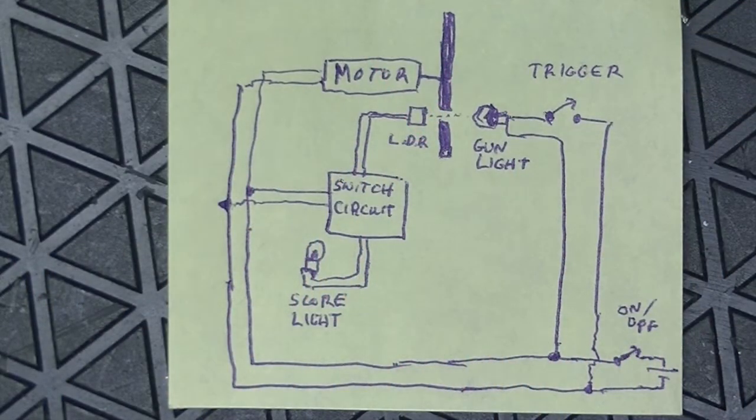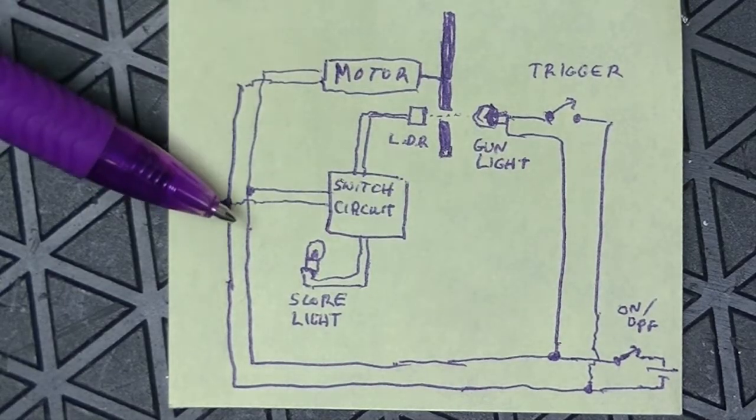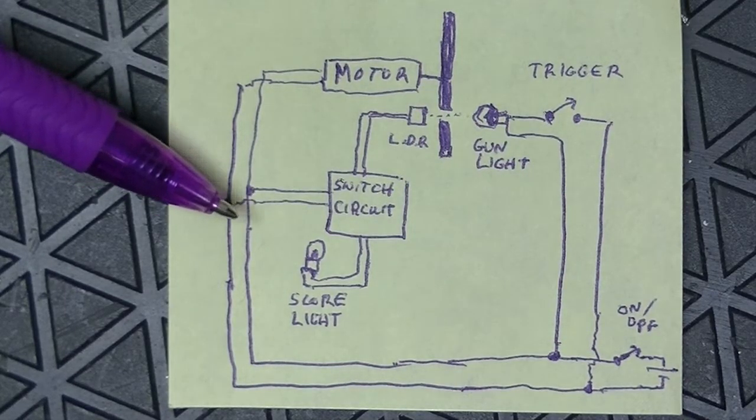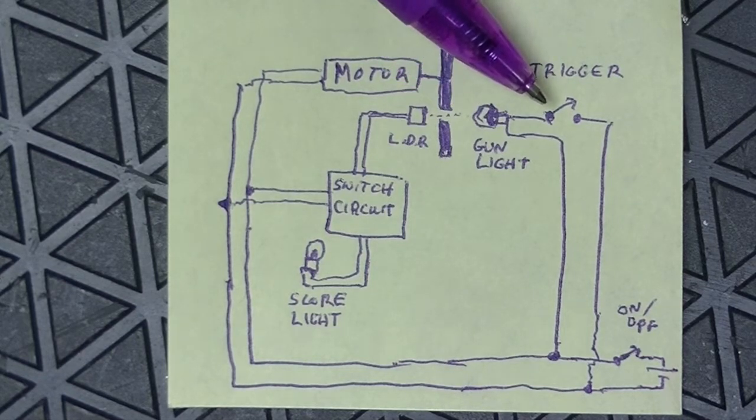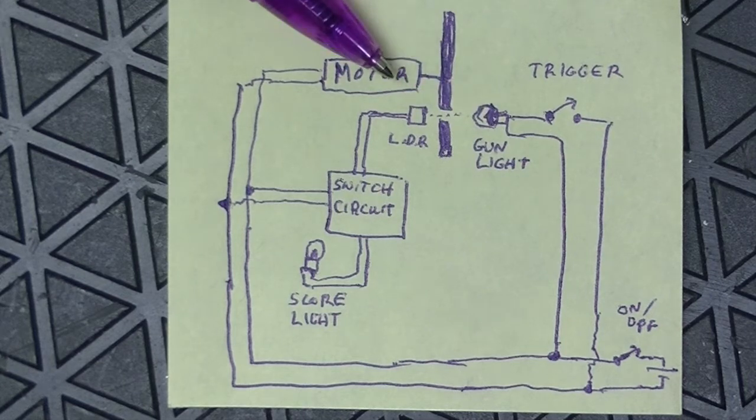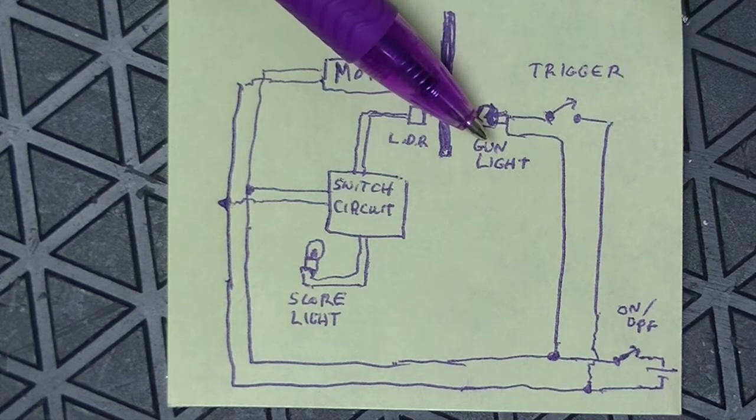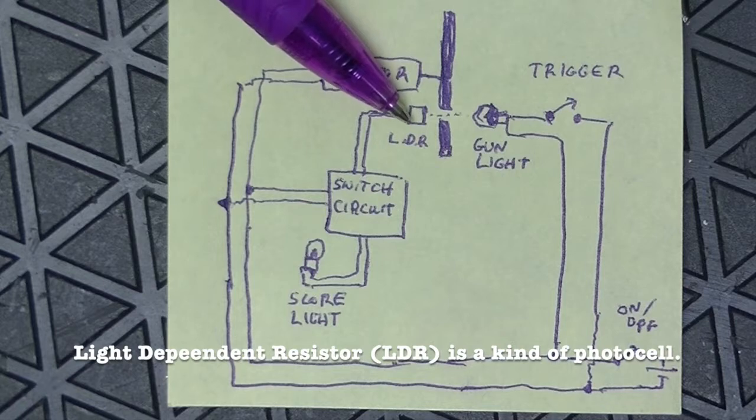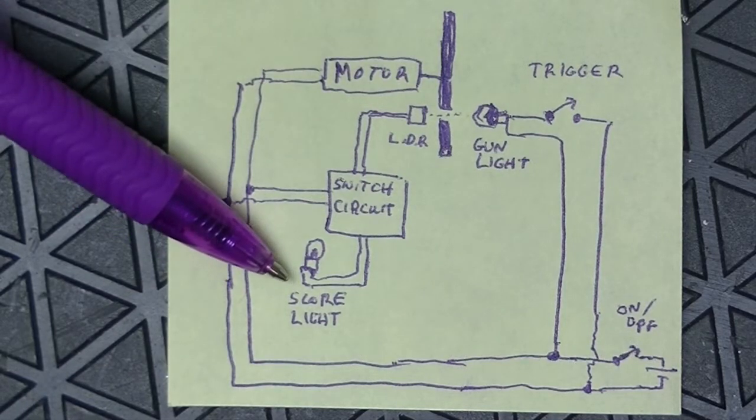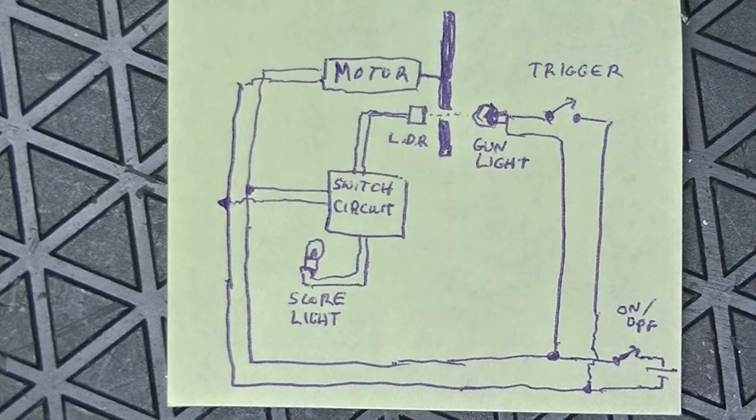If I was designing this sort of toy, I would have an on-off switch powering a motor and a switch circuit. Also, a gun light with a trigger. The trigger would turn the gun light on. The motor is spinning a disc with a tiny hole. If the gun light is on, while the hole is exposed to the LDR, light-dependent resistor, the switch circuit turns on the score light. That's how I would design it. But how it's actually done with this toy, we'll find out once we open it up.